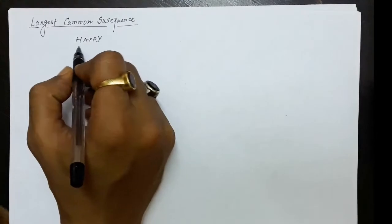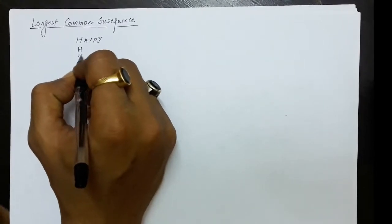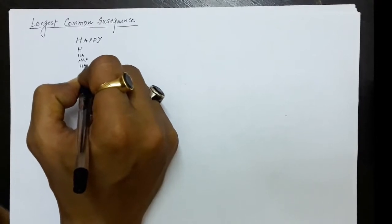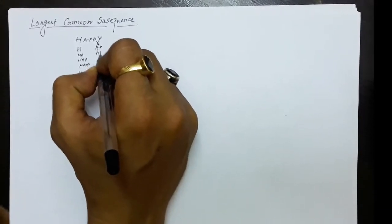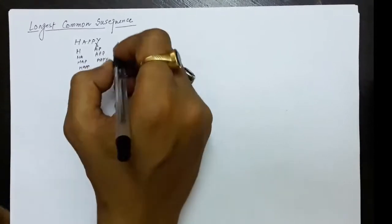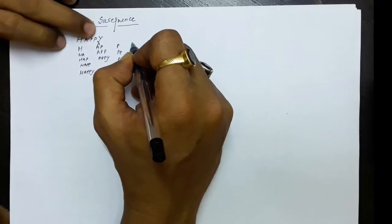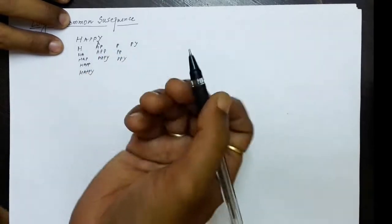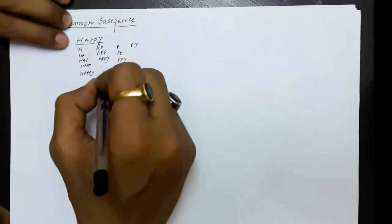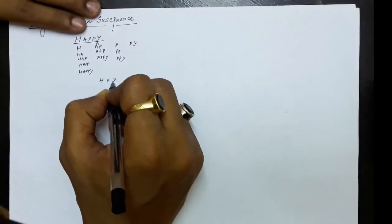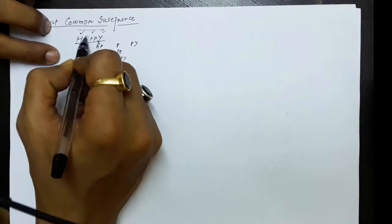For example, if I have the string 'happy', a subsequence of this string may include substrings like h, ha, hap, happ, happy, and similarly a, ap, app, and so on. A subsequence means you take h, then you take p, then you take y — so this is a subsequence. In a subsequence, you can skip some of the characters in between.